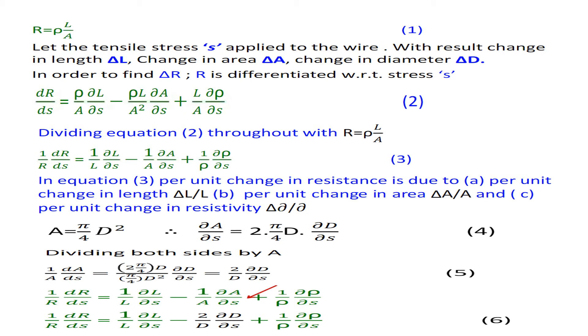A = πd²/4, therefore dA/dσ = 2πd/4 × dd/dσ. Dividing both sides by A, we get 1/A dA/dσ = 2πd/4 / πd²/4 × dd/dσ = 2/d dd/dσ. This is equation 5.